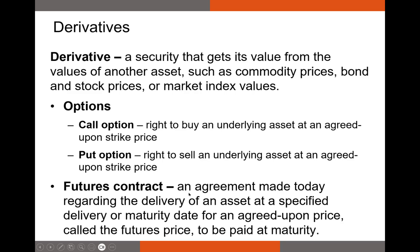Futures contracts are agreements made today detailing the delivery of an asset at a specified future date for an agreed-upon futures price. Futures allow you to lock in the price at which you sell an asset, reducing risk. For example, a farmer can lock in $7–8 per bushel for their corn six months from now — even if the market price drops below that, they still receive the agreed futures price.